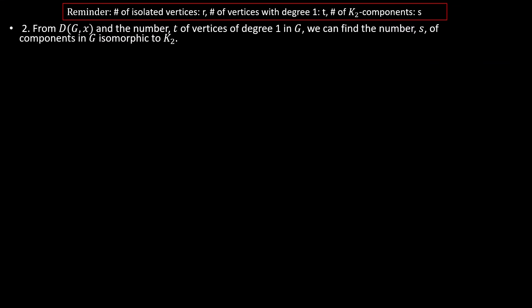Moving on, as we mentioned earlier, if we have the domination polynomial and the number t of vertices of degree one, we can find the number s of components isomorphic to K2. This result comes from solving for s in an equation where the number of dominating sets of size n minus two in a graph g equals a formula involving t, s, and r. From the domination polynomial we already know n and r, so all we need in addition to solve for s is t, and all we need in addition to solve for t is s.